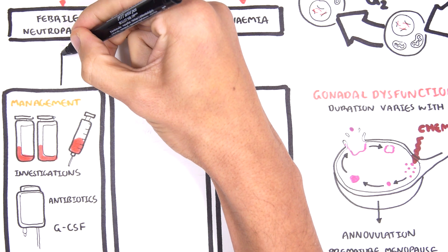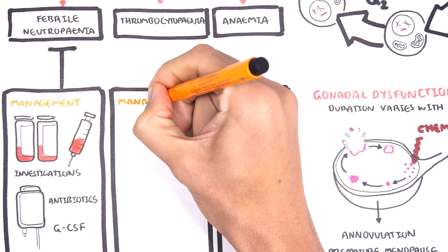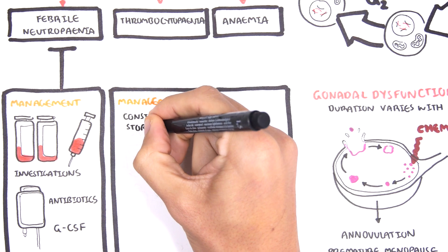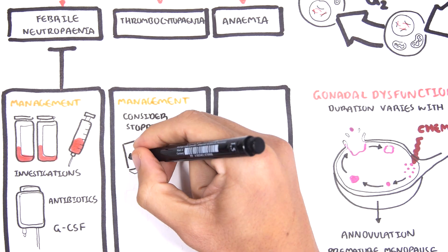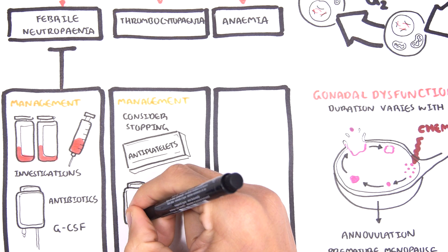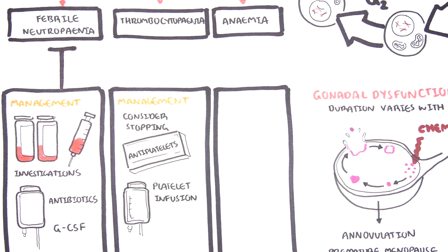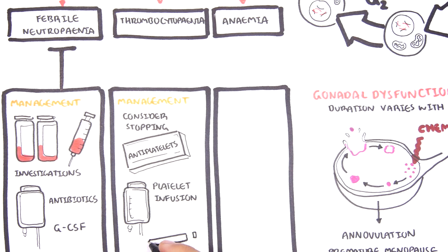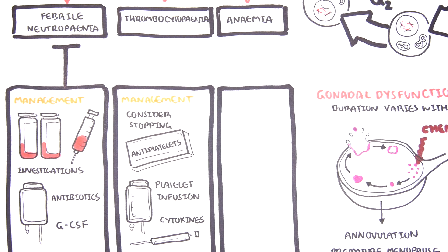For thrombocytopenia, it is important to assess the patient's medications — particularly if they are on antiplatelet drugs such as aspirin and clopidogrel — and consider stopping these. If the platelet count is very low, a platelet infusion may be needed, and cytokines can be administered to help promote platelet production.